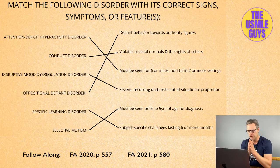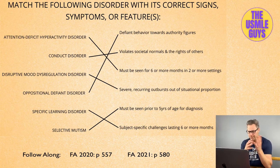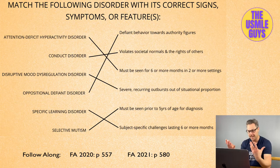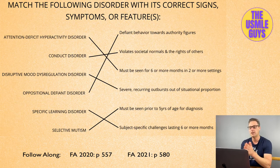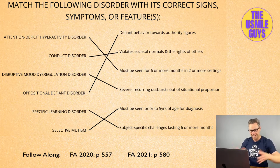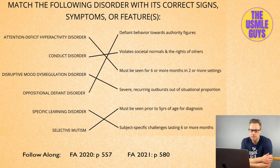One of the key features of this condition, aside from outbursts, is that between episodes the child is irritable and angry. That's something you want to look out for in a vignette — not just an isolated event, but a recurring pattern, plus anger and irritability in between those episodes.